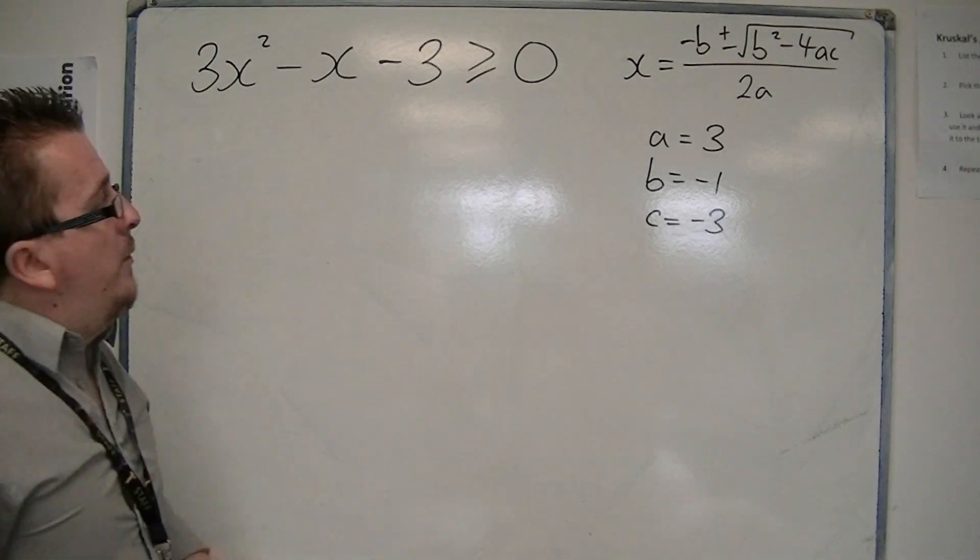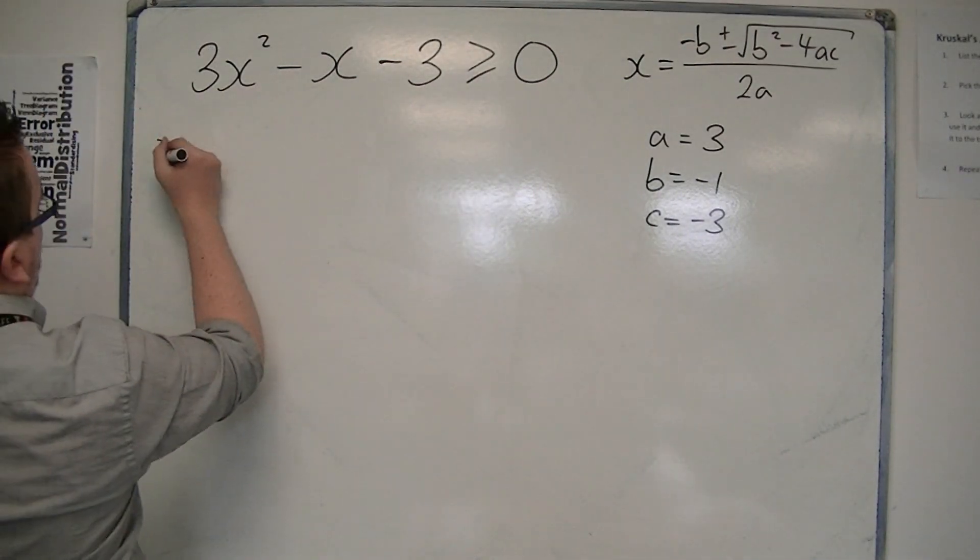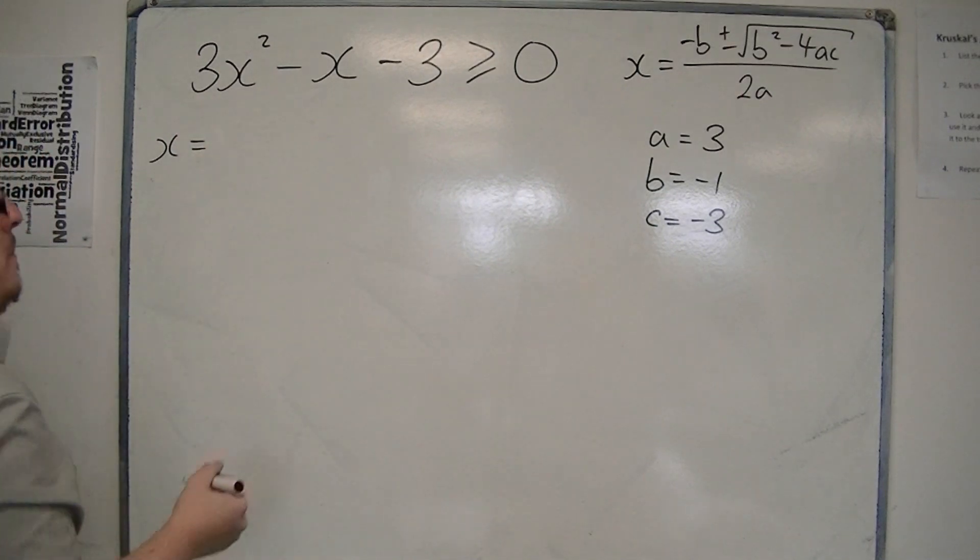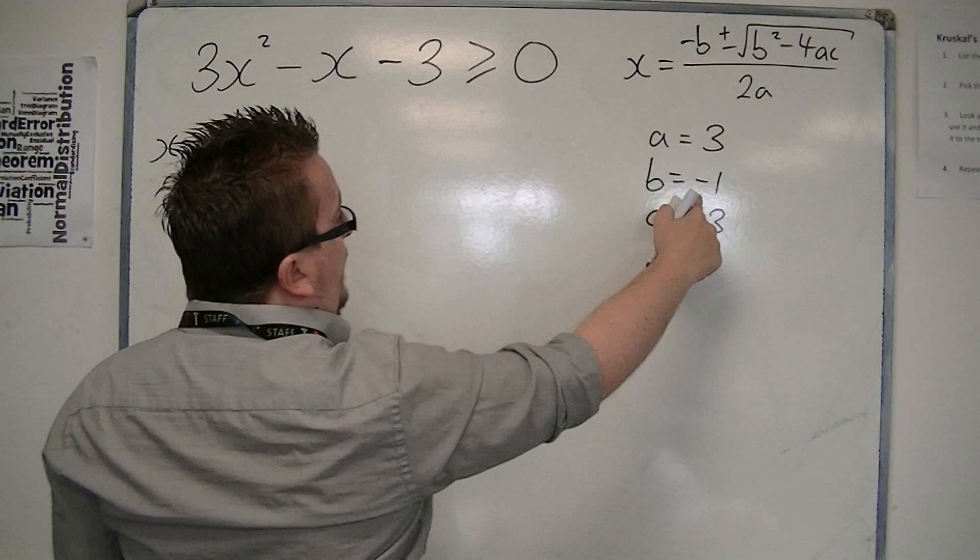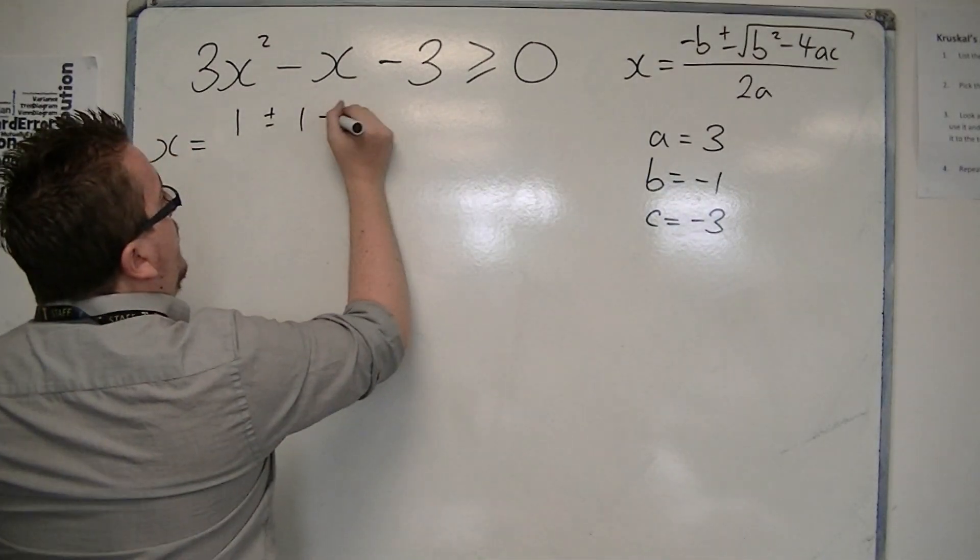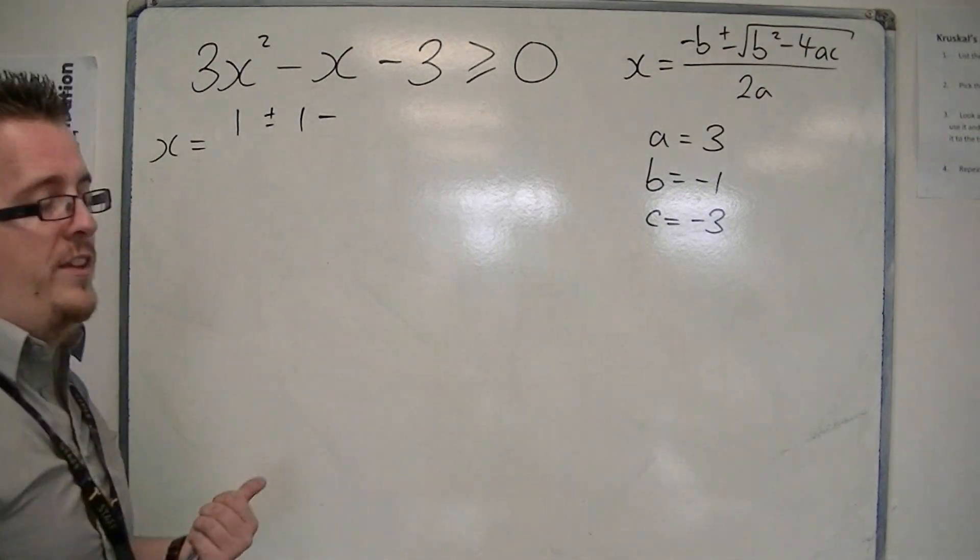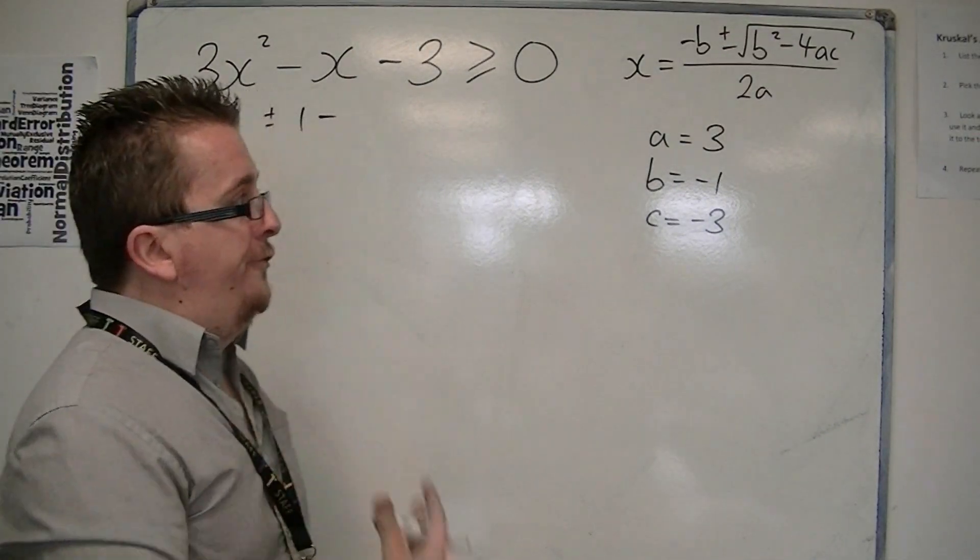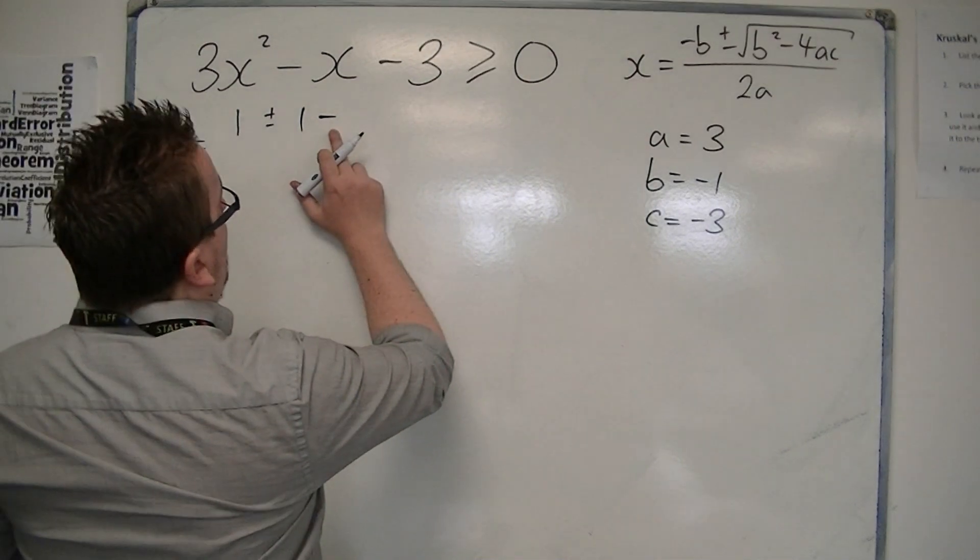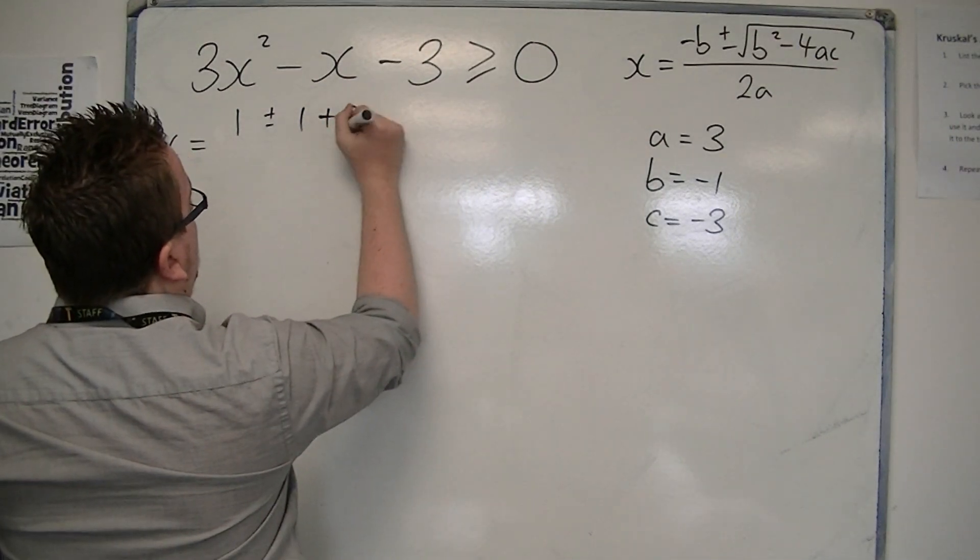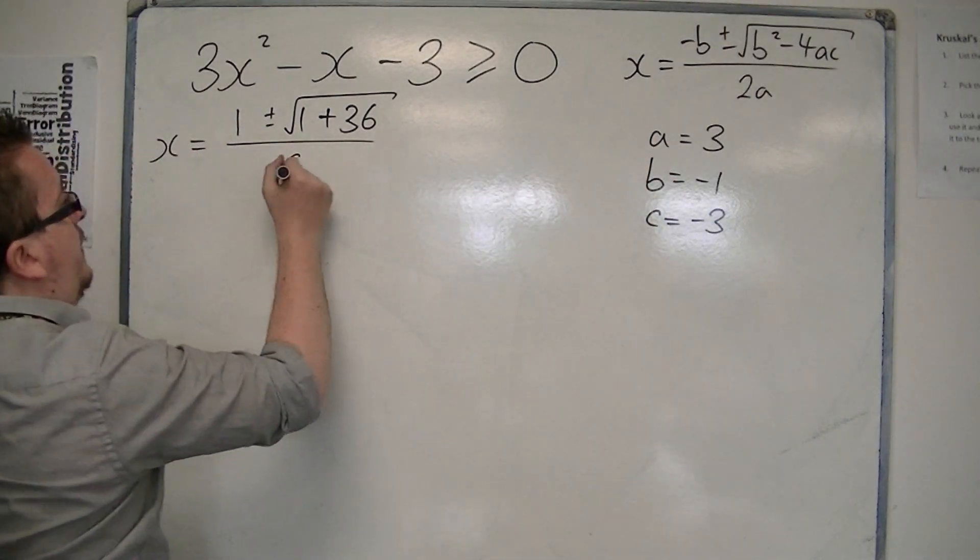So if this had been equals to, our solutions would be x is equal to minus b, so that's just 1, plus or minus b squared is 1. Take away 4 lots of 3 times minus 3. Well, 3 times minus 3 is minus 9. 4 lots of minus 9 is minus 36. If we're taking away minus 36, then we're adding together. And it's all over 2a, which is 6.